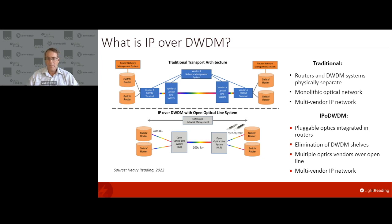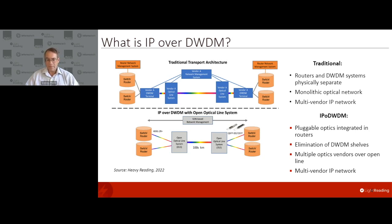Traditionally, while there has been interoperability at the routing layer — layer three — the optical layer has historically been owned and controlled by a single vendor. That would include the DWDM terminals with the transponders, the line system, and the management of that system. That is historically, and really up to today, how optical networks have been built out. Of course, they can work with routers from different vendors.